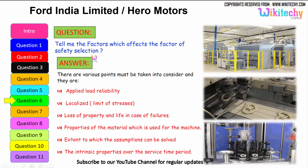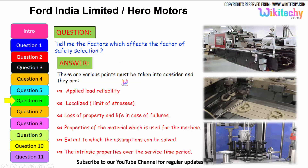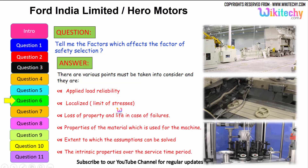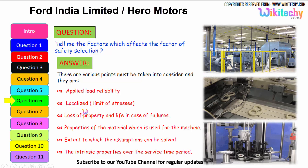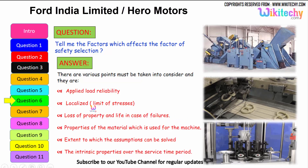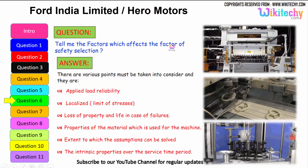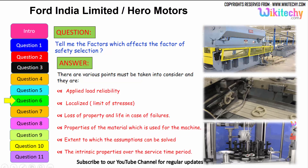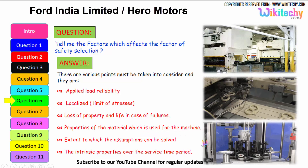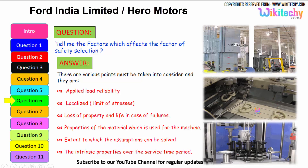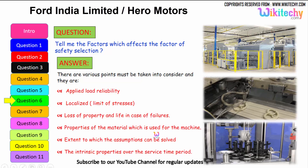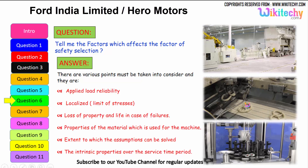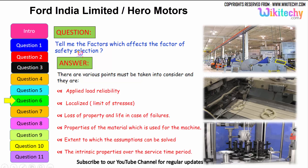Now let us see the factors which affect the selection of the factor of safety. These include: the reliability of the applied load, the limit of localized stresses, the loss of property and life in case of failure, the properties of the material used for the machine, the extent to which assumptions can be validated, and the intrinsic property of the material over the service time period.